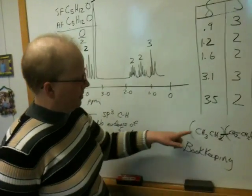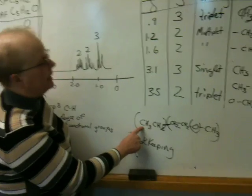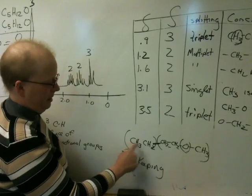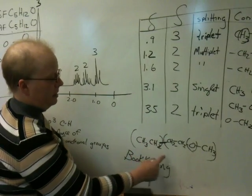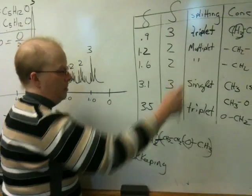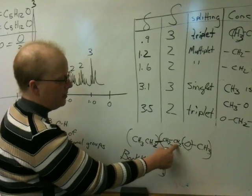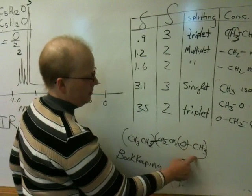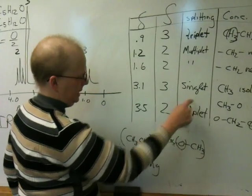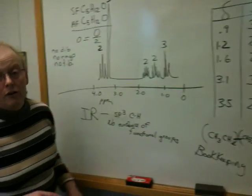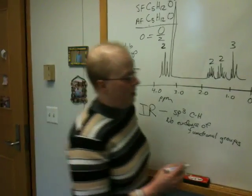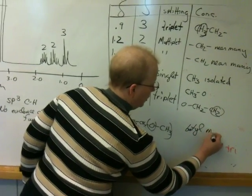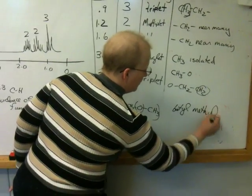Now let's check it. This would give area of 3 triplet. This would give area of 2 multiplet. This would give area of 2 multiplet. This would give area of 2 triplet. This would give area of 3 singlet. So that is the correct structure for that compound. That is methyl butyl ether.